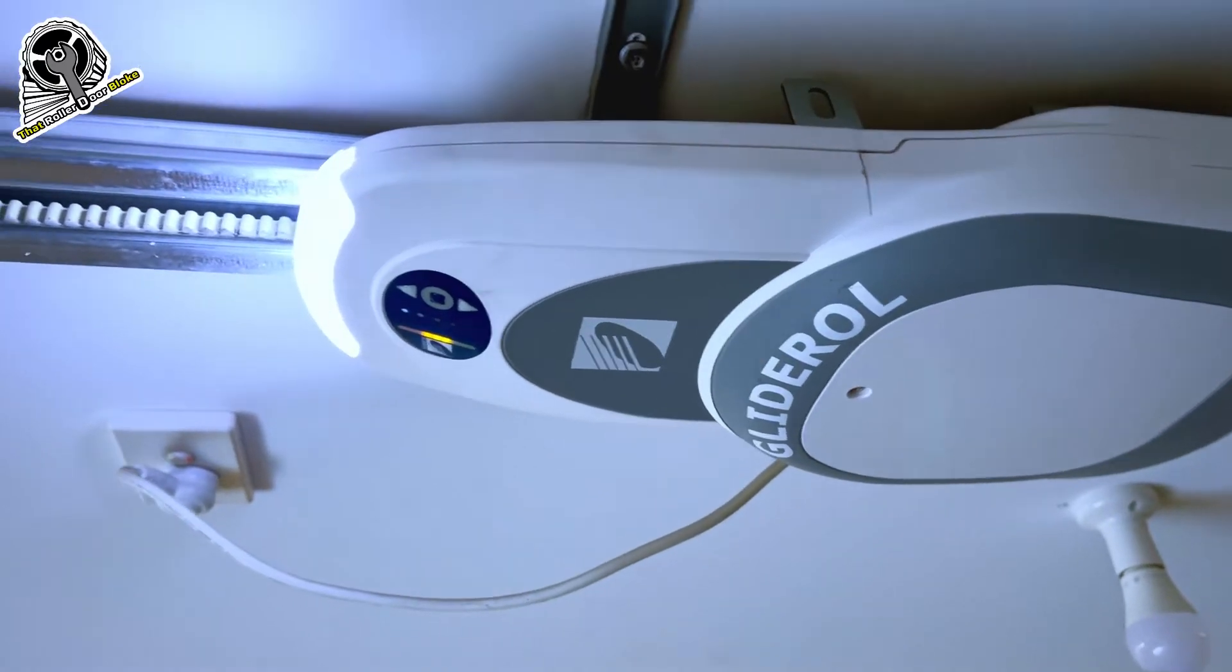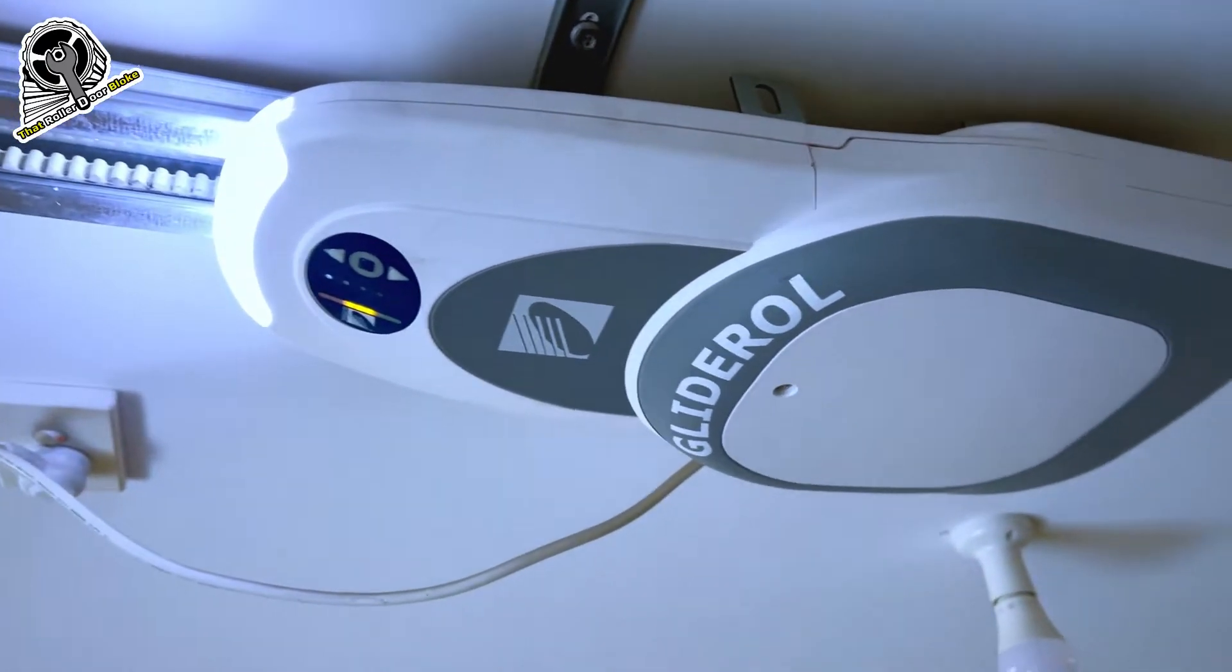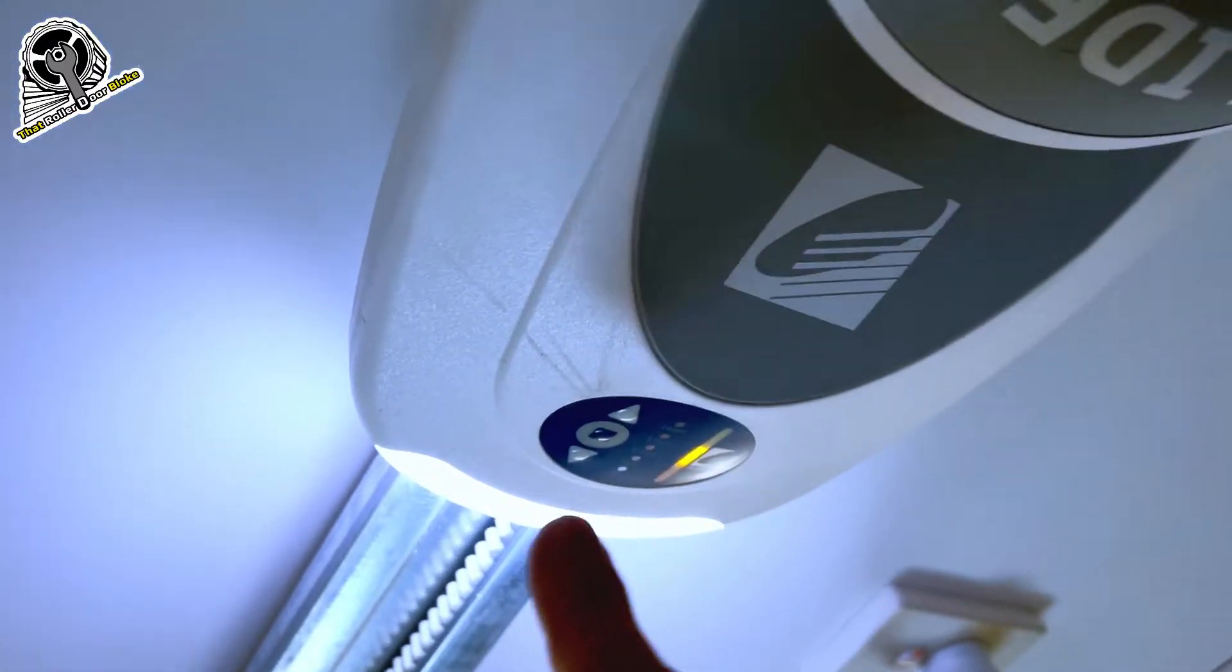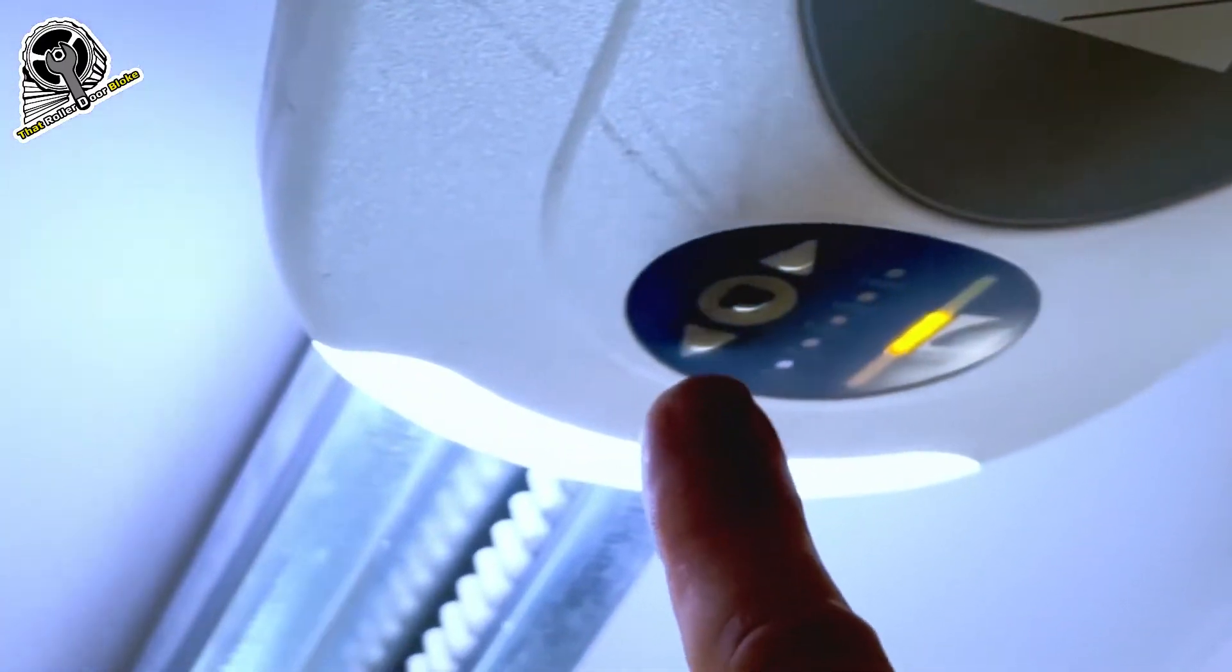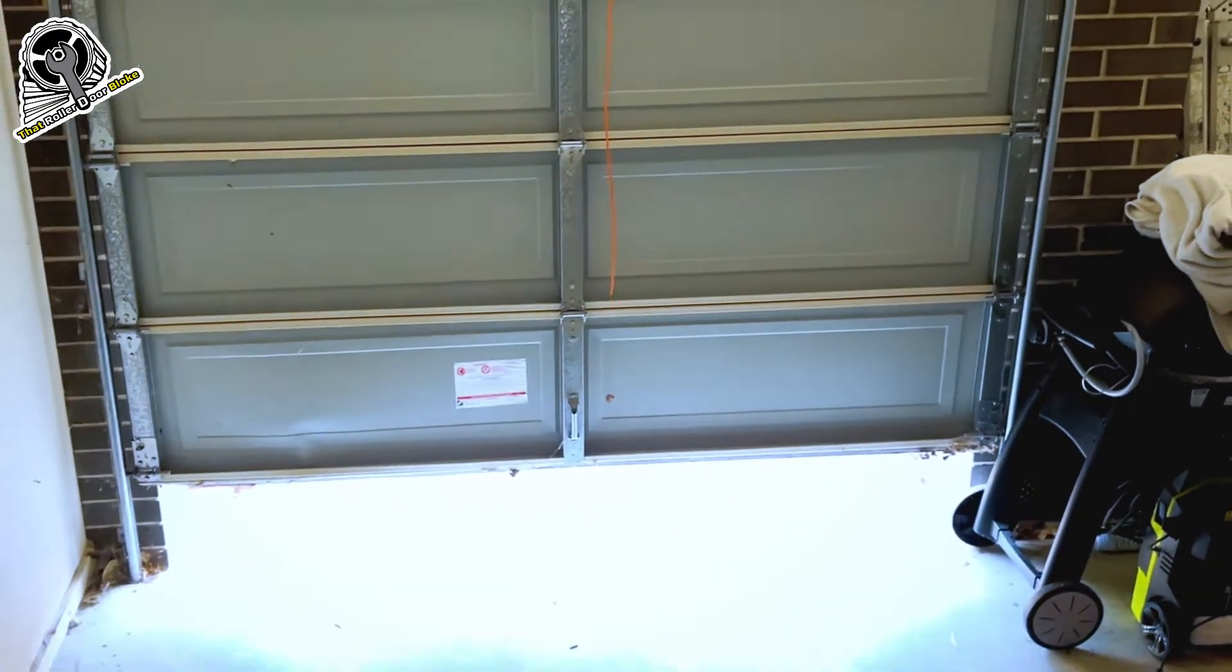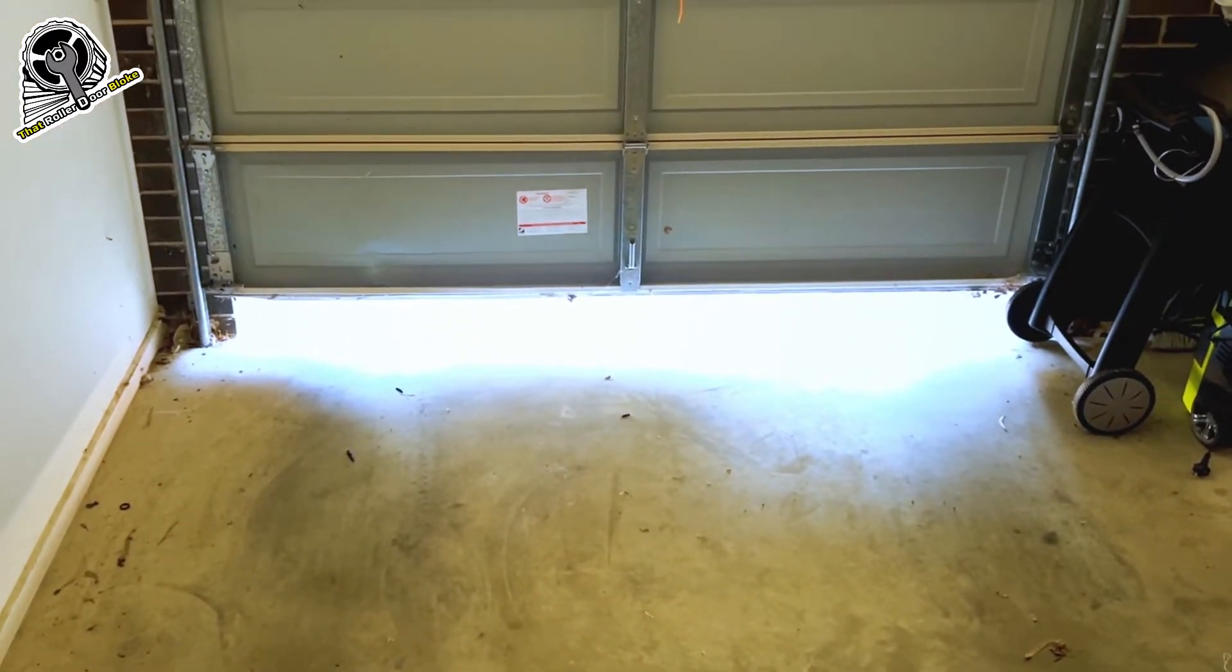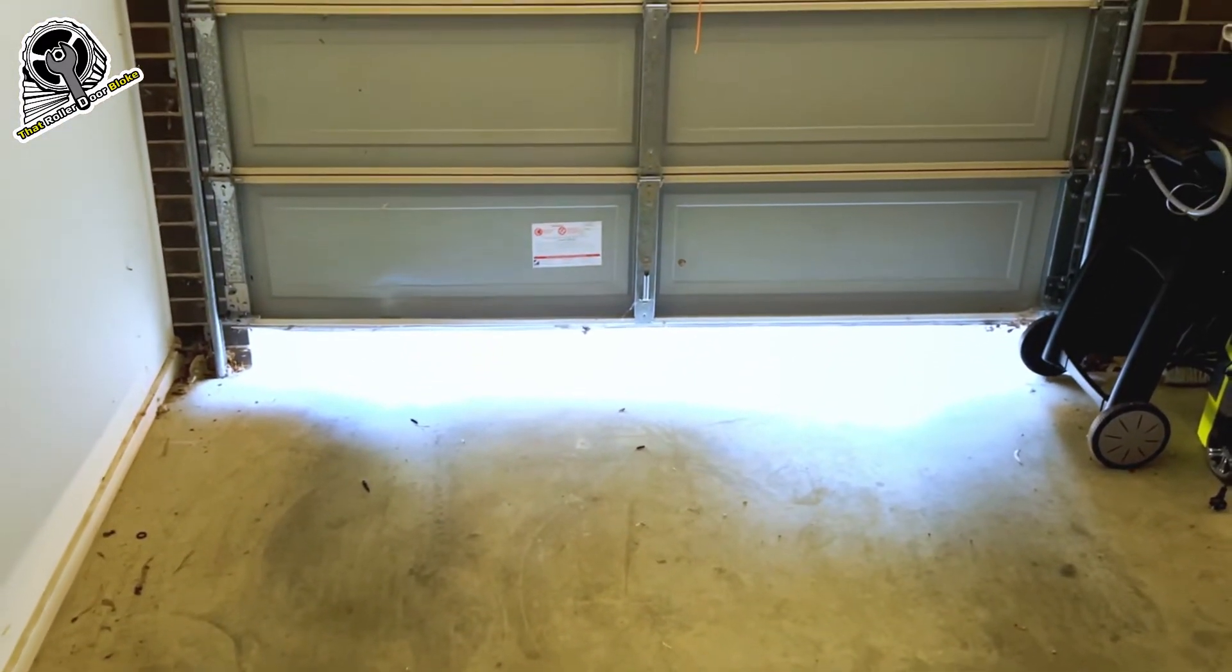All right, today we've got a Glider Roll GTS Plus sectional garage door motor that's not closing all the way. We'll just use the onboard buttons to close the door, which is the forward arrow, and that's where it wants to stay shut right there. So we've got quite a bit of a gap down there.